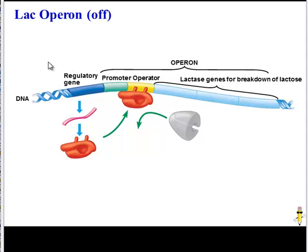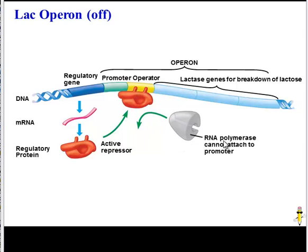The regulatory gene is always on — it's always being transcribed into mRNA and translated into the regulatory protein. That regulatory protein acts as a repressor. When it is active, it binds to the operator and prevents RNA polymerase from binding to the promoter. If RNA polymerase can't bind to the promoter, these genes cannot be transcribed or translated. And that's fine, because right now there is no lactose in the bacteria's environment, so there's no need to be transcribing genes for lactase to break down non-existent lactose.